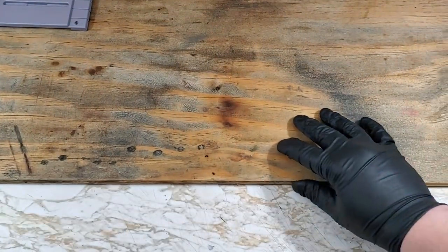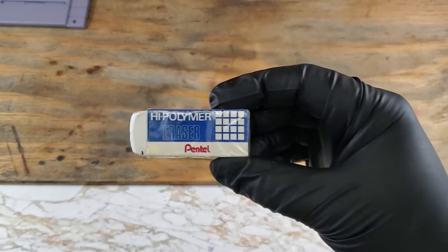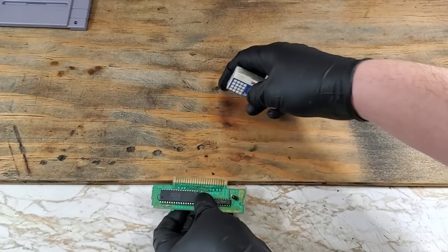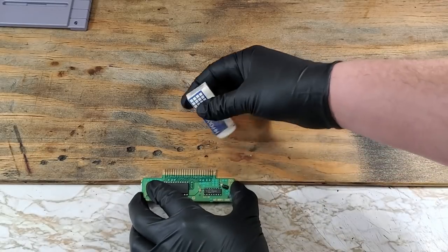While that's drying, let's polish those contacts with a high polymer eraser. We'll just rest the board on the edge of a table, or ledge of sorts, and polish them until those contacts are nice and shiny.